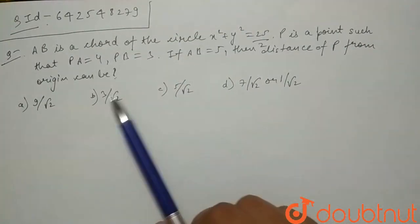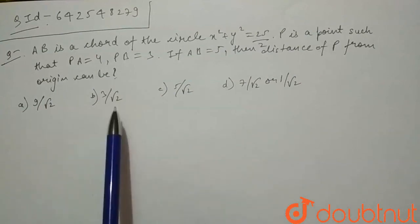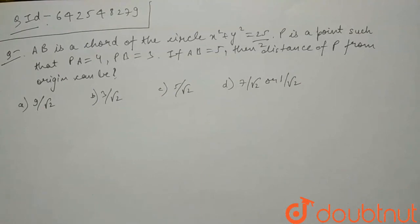P from origin can be: option a, 9 by root 2; option b, 3 by root 2; option c, 5 by root 2; and option d, 7 by root 2 or 1 by root 2.